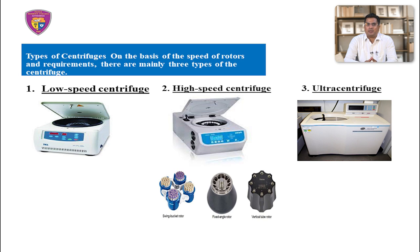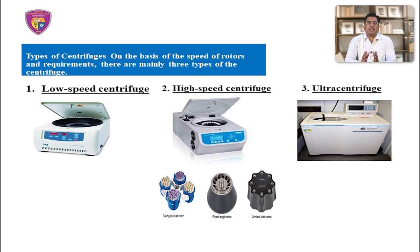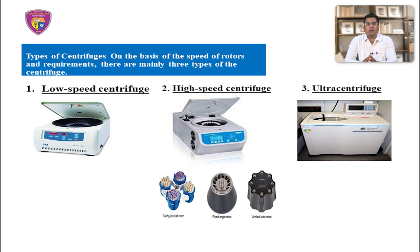The third type is the ultracentrifuge, the most sophisticated instrument, with a maximum speed of 65,000 RPM. Since intense heat is generated at ultra-high speeds, the spinning rotor chamber must be refrigerated and kept at a high vacuum. It is used for both preparative and analytical work, meaning isolation and analysis. According to applicability, categories include micro centrifuge, small bench-top centrifuge, general purpose centrifuge, and large capacity centrifuge.